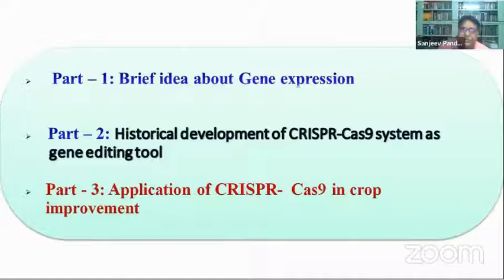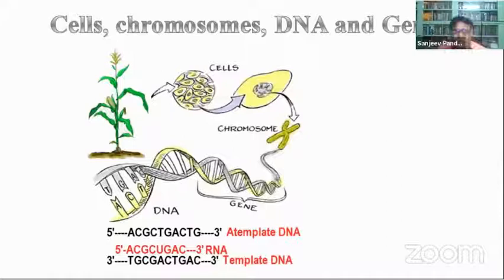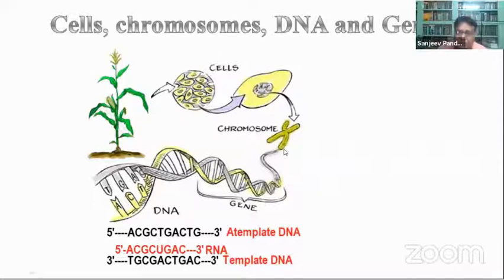Every organism's body is made up of cells. Cells may contain a nucleus or may not — if they are prokaryotic, they will not contain nuclei. But each of these cells has chromosomes, and the chromosomes contain the DNA. The DNA contains the gene. This basic part is for those who are not from a biology background.